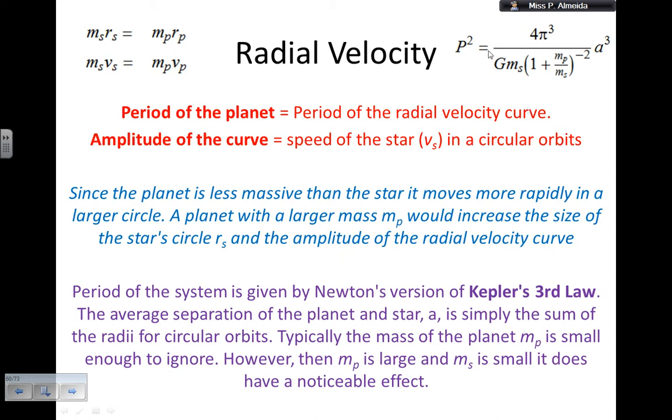And then I can use these equations. The period of the planet squared equals four pi cubed all divided by G, the gravitational constant, times the mass of the star, that multiplies one plus the mass of the planet over the mass of the star, all of that to the power of minus two. And I multiply that whole thing by the cube of the semi-major axis. And here is how the relationship works. The mass of the star times the velocity of the star equals the mass of the planet times the velocity of the planet. I can do the same for the radii.